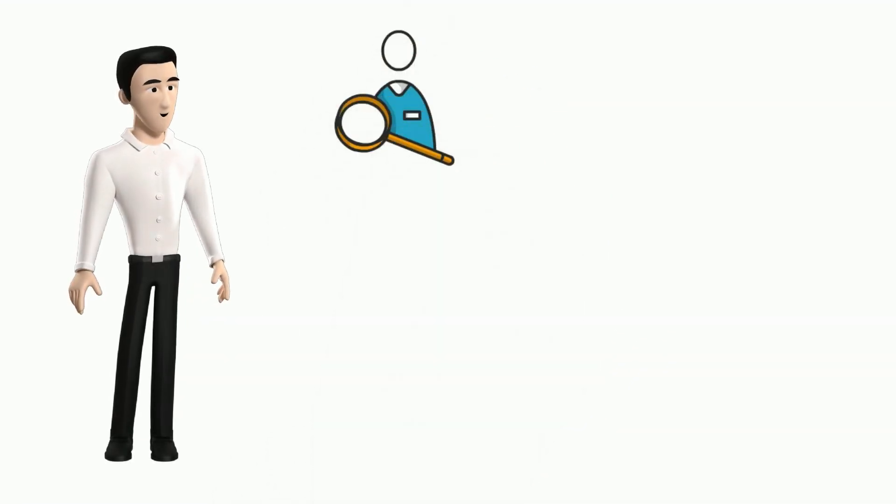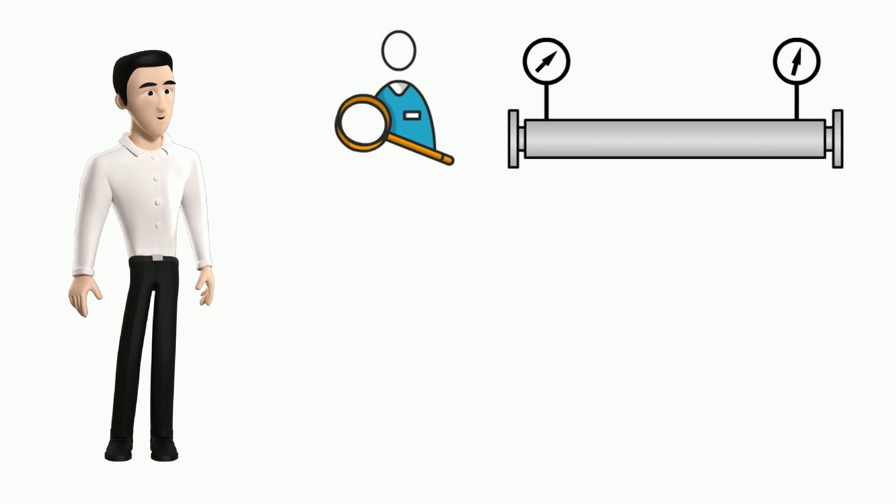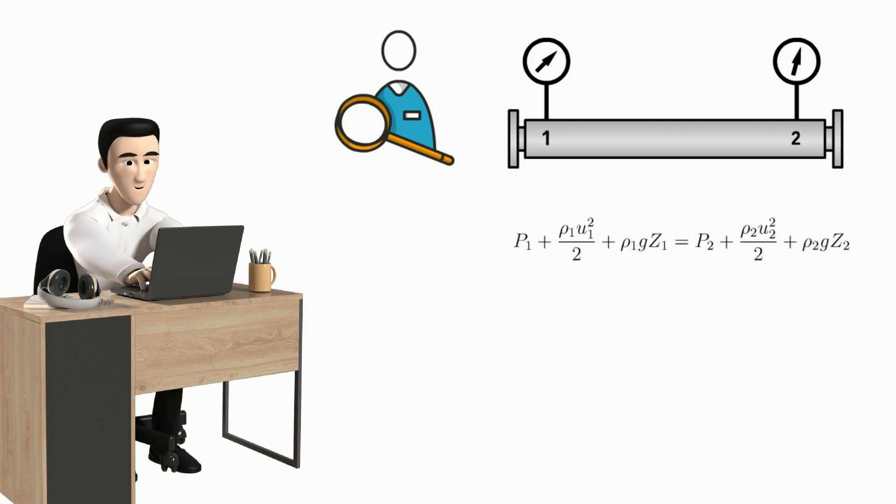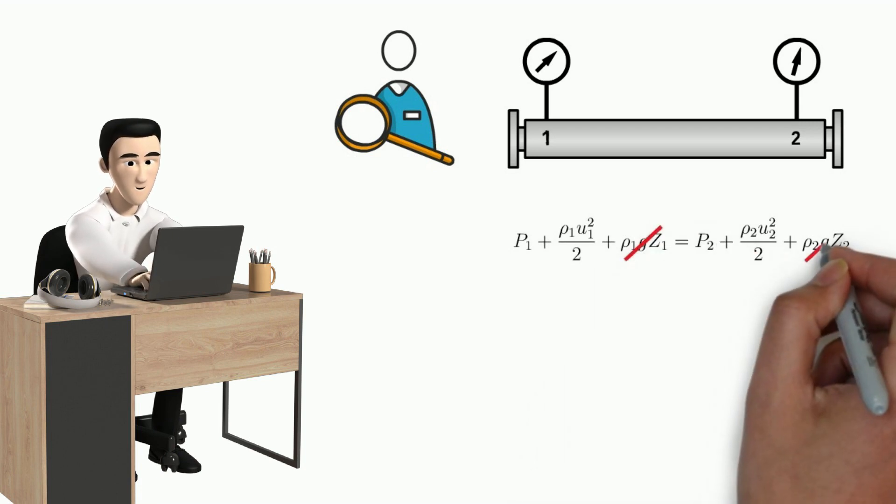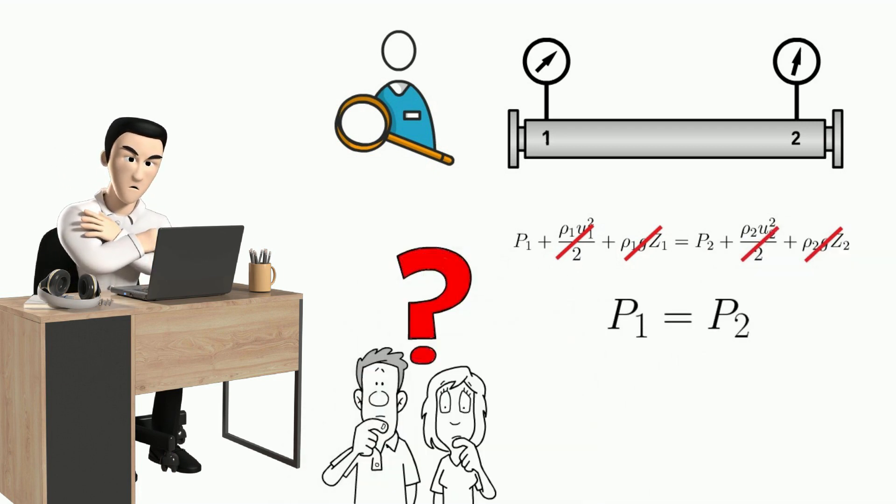Max has observed that for the constant diameter horizontal pipe, pressure is differing even from one point to another. But according to Bernoulli's principle, it should be the same as there is no change in the elevation or diameter of the pipe. So, is it violating Bernoulli's principle? Can you help Max?